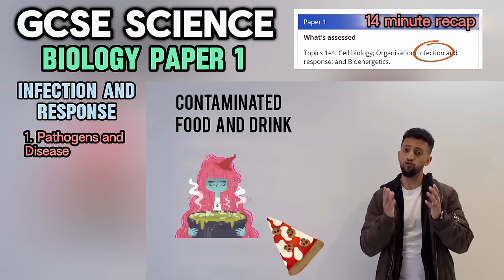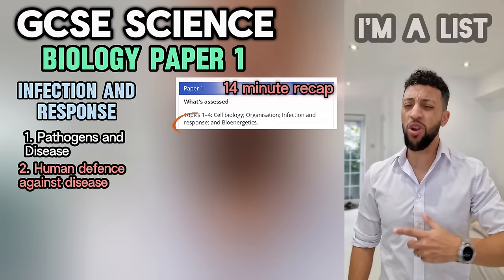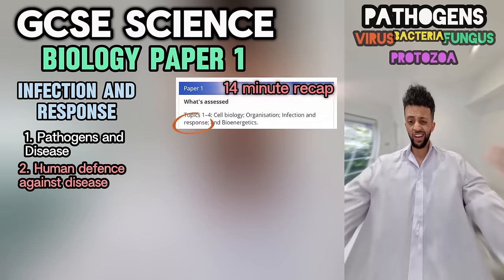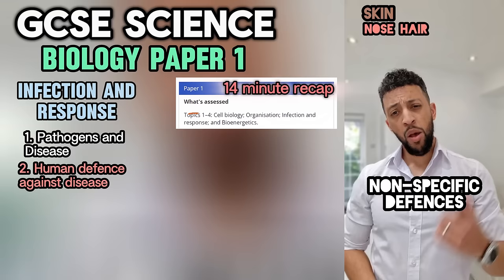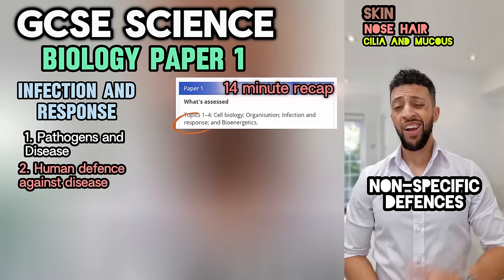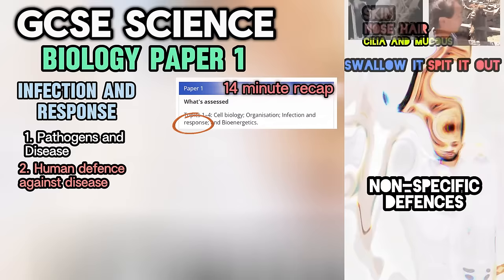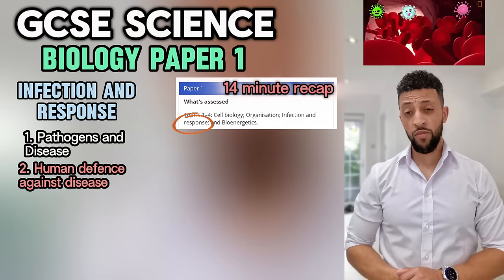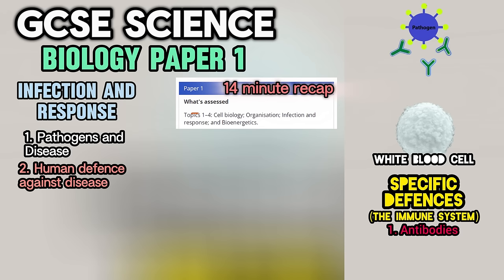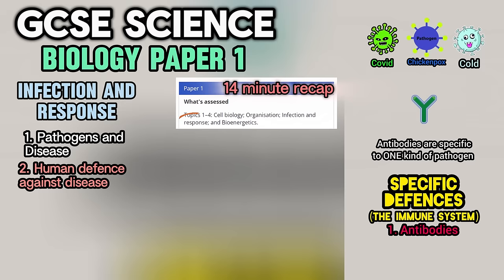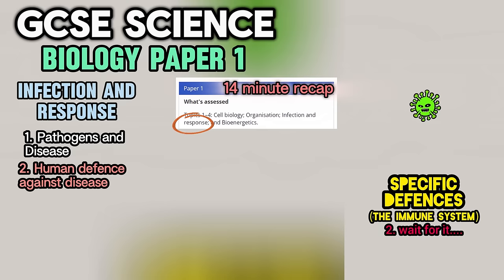Pathogens spread when hygiene is poor — droplet infection from sneezing or coughing, or contaminated food and drink. Your body keeps you safe in several ways. Skin stops pathogens getting in. Nose hairs trap them. Cilia and mucus move germs to the throat. Stomach acid kills pathogens that reach it. In the blood, white blood cells release antibodies that bind to pathogen antigens — each antibody works on only one type. White blood cells can also engulf pathogens — that's phagocytosis.